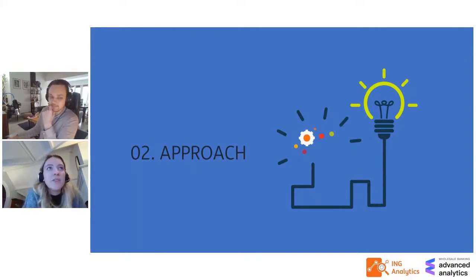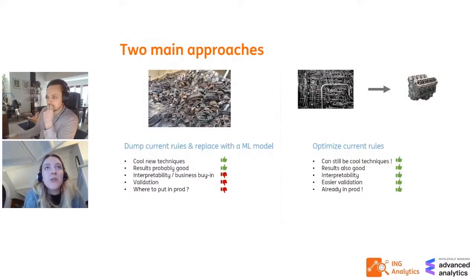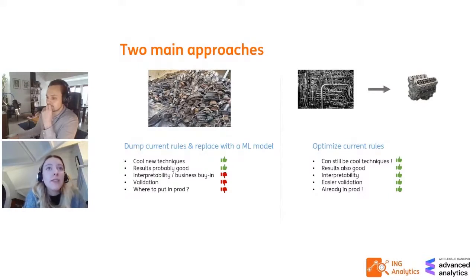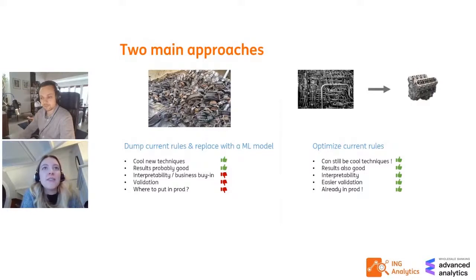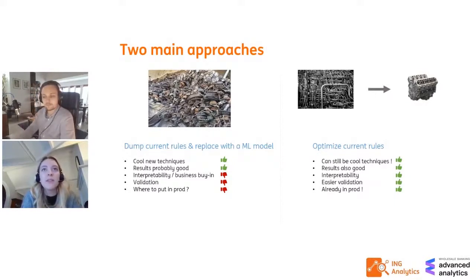We mainly identified two approaches to tackle the problem. The first would be to dump the current rule-based decision engine and replace it with a machine learning model. The advantages are that quite a few new techniques are available yielding good results. But the main disadvantages are that it's difficult to achieve business buy-in — the model often functions as a black box for stakeholders — and it takes quite a long time to run through the whole validation process and put a new model into production.